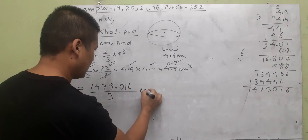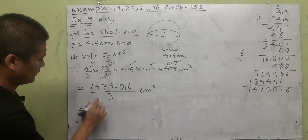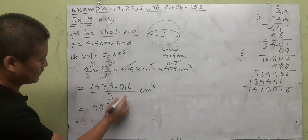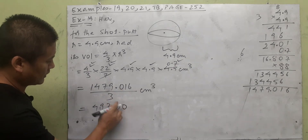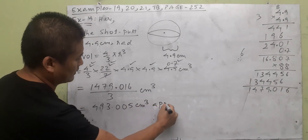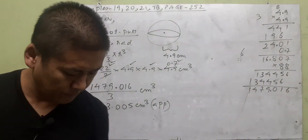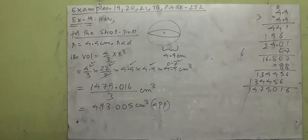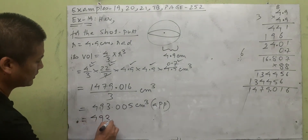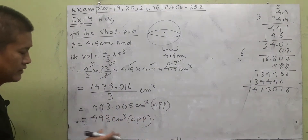So the volume works out to approximately 493.005 centimeter cube. Since it is very close to 493, we can write it as approximately 493 centimeter cube, neglecting the small decimal part, as in the textbook.